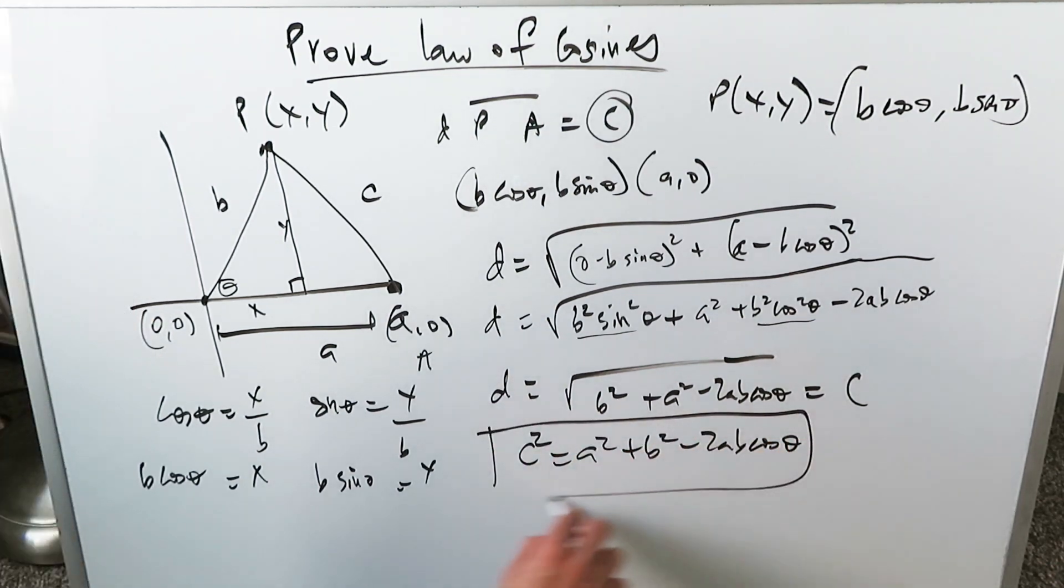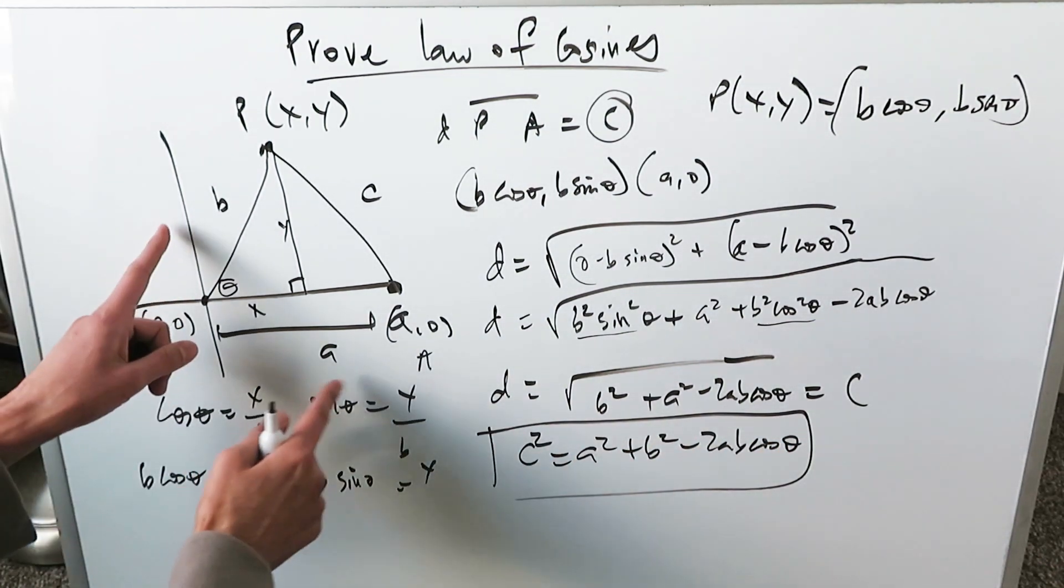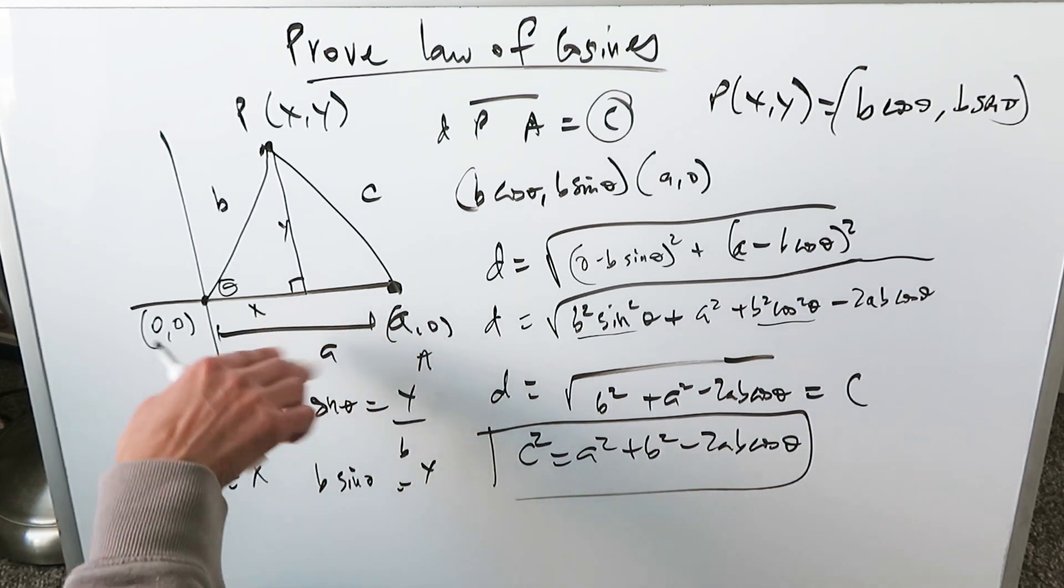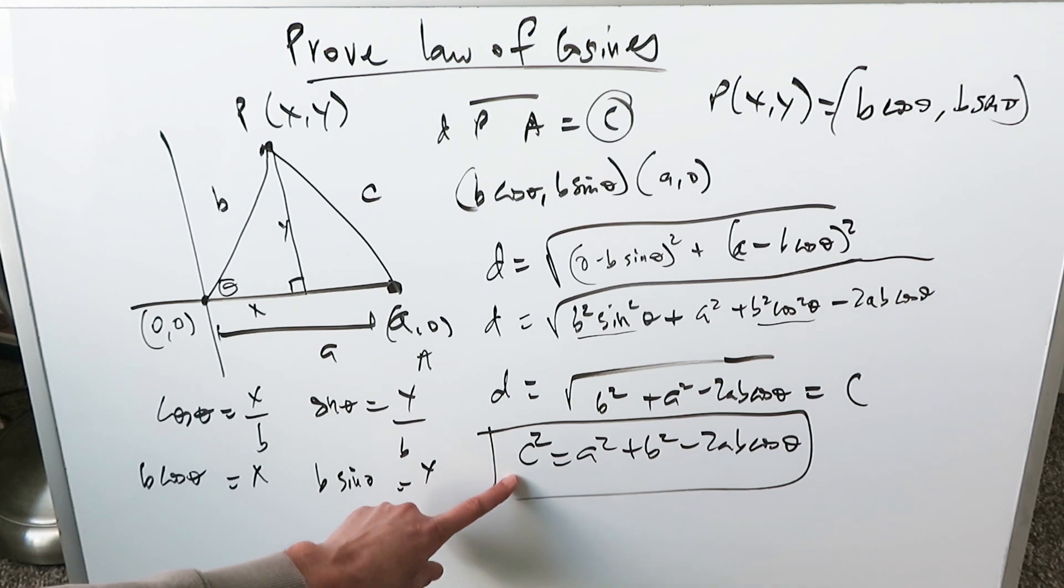And here's your law of cosines. With regards to c, you can flip these letters around. And this designation here, you can make it b comma 0, c comma 0. Flip things around. And you can individually come up with the law of cosine variance for a square and b square.